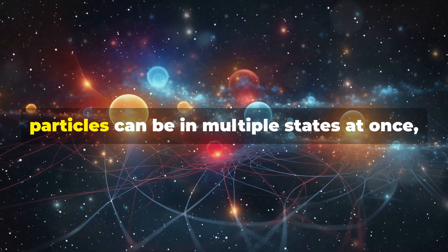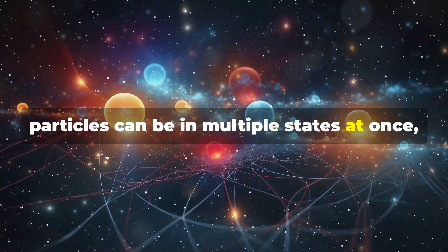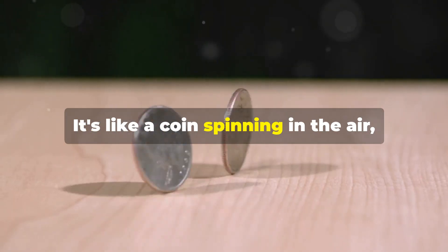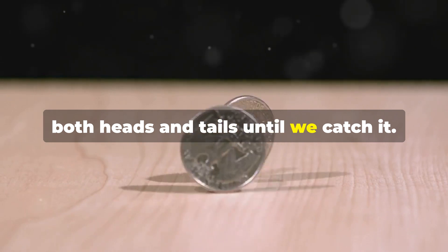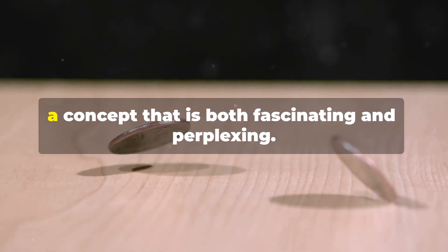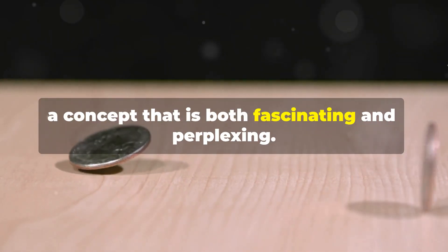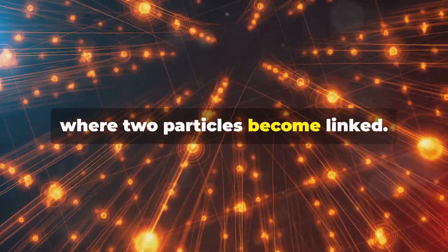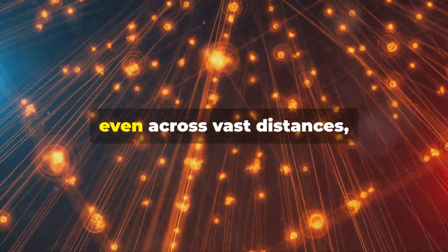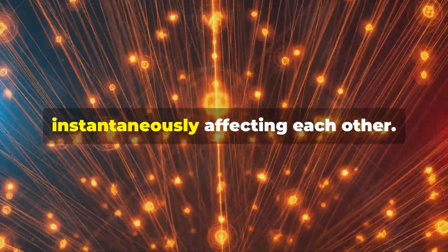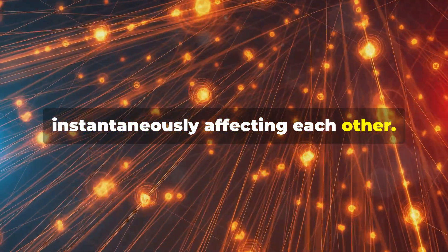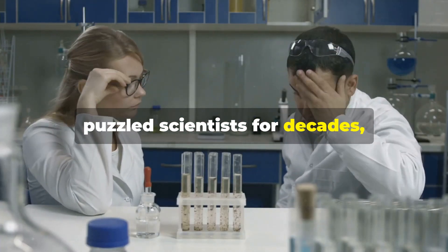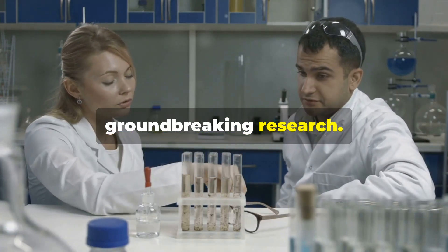In the quantum world, particles can be in multiple states at once, a phenomenon known as superposition. It's like a coin spinning in the air, both heads and tails until we catch it. Then there's entanglement, where two particles become linked. They share a destiny, even across vast distances, instantaneously affecting each other. These strange quantum phenomena have puzzled scientists for decades, leading to intense debates and groundbreaking research.